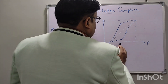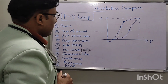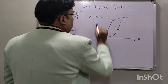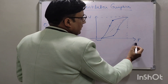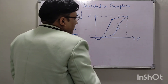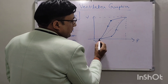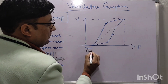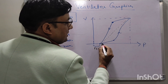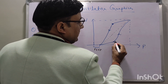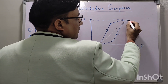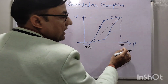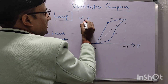Coming to the parts of the PV loop: on the x-axis there is pressure (in cmH₂O) and on the y-axis is volume (in liters). This PV loop will not start from zero — it will start from the PEEP point. From PEEP, inspiration starts; with increasing pressure, volume increases, reaching the maximum PIP. At maximum pressure, maximum volume — the tidal volume — is reached.